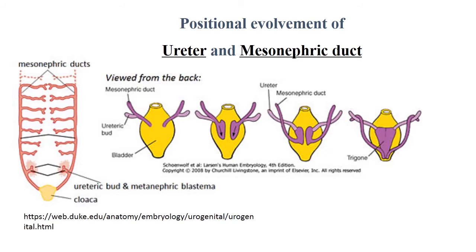Not only does the kidney change its position — the ureter does too. The mesonephric duct and ureteric bud develop, the mesonephric duct is left behind, and the ureter appears. During this development, the trigone appears on the urinary bladder, which has a different origin than the other parts of the urinary bladder.